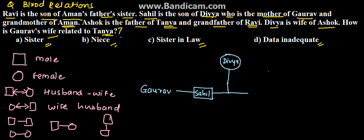Divya is also the grandmother of Aman. So Aman is the grandson, meaning Divya is the grandmother. We will write Aman in the next generation below.